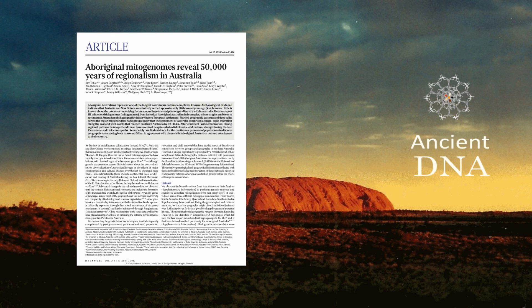The paper 'Aboriginal mitogenomes reveal 50,000 years of regionalism in Australia' in Nature uses mitochondrial DNA haplogroups to reconstruct the peopling of Australia.